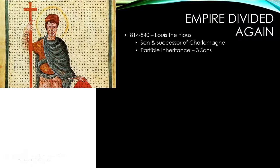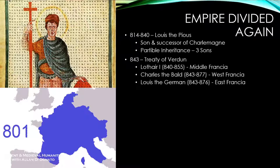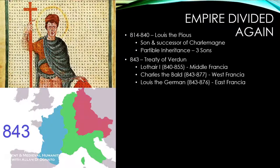The successor of Charlemagne was his son Louis the Pious, from 814 to 840 — a very devout man, hence the nickname. Unfortunately he had the problem of leaving the territory to multiple children. He had three sons the kingdom was divided between, leading to civil war, which was eventually concluded at the Treaty of Verdun in 843. The three sons were Lothair I, who took Middle Francia (840–855).